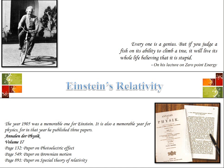The year 1905 was a memorable one for Einstein as well as a memorable year for physics. In that year, he published three papers in the journal Annalen der Physik: volume 17, page 132, he published the paper on photoelectric effect; page 549, he published the paper on Brownian movement; and page 891, he published the paper on special theory of relativity. He was awarded Nobel prize for photoelectric effect.